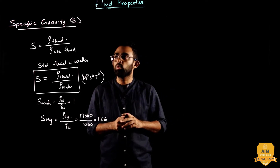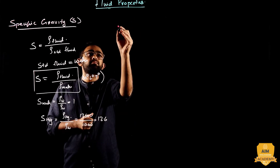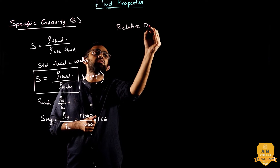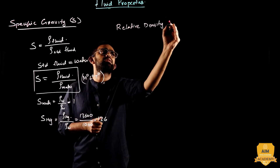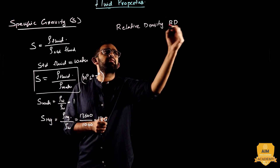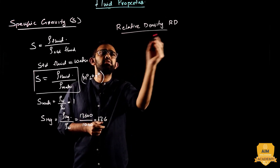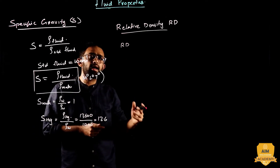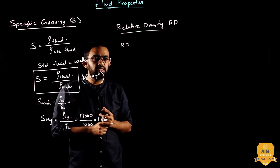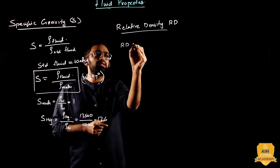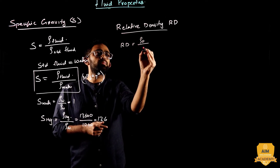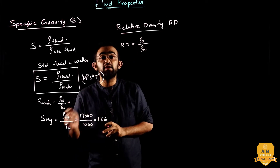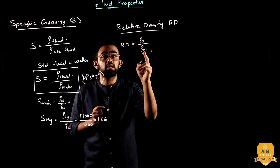So, let's go through relative density. Relative density is a particular interchangeable term in some cases. For example, relative density means the density of oil with respect to the density of water — that is relative density, but in this case it is also specific gravity, because the denominator is the standard fluid.